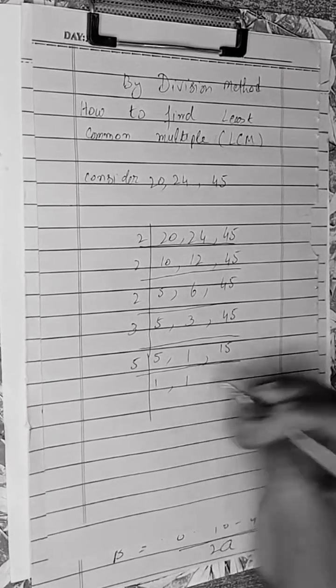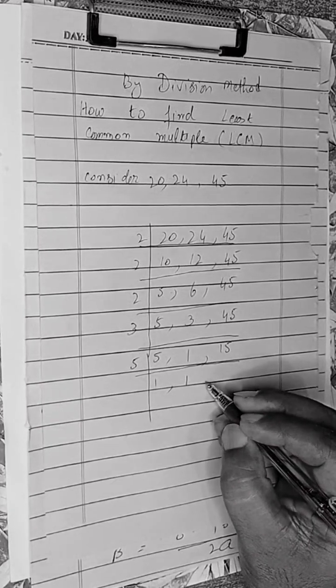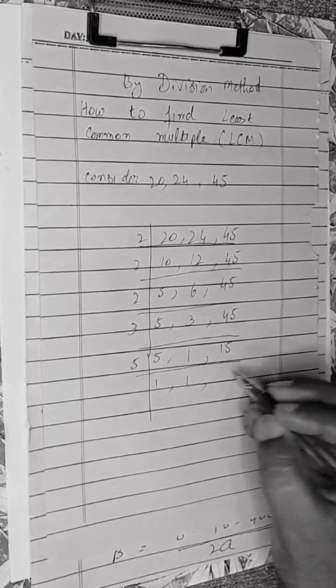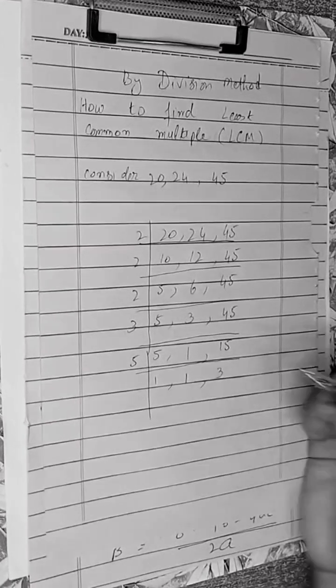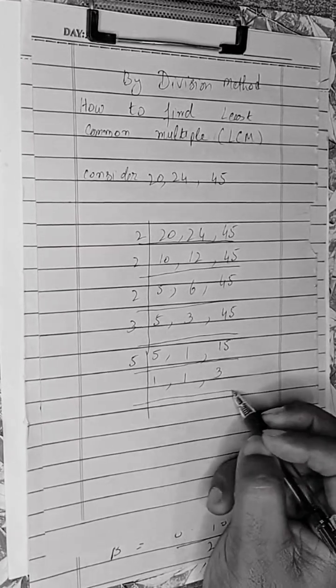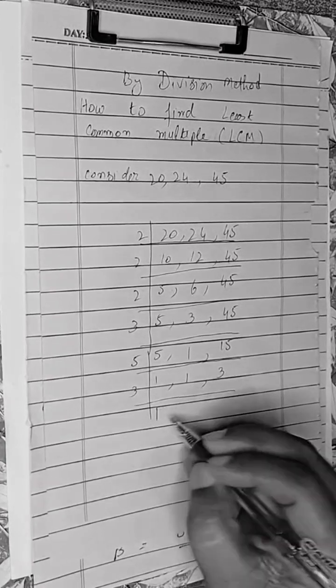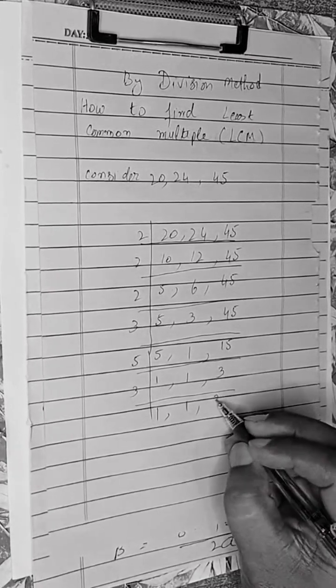5 divided by 5 is 1. One will remain as it is, and 15 divided by 5 is 3. Now there is 3: one as it is, one as it is, and 3 divided by 3 is 1.